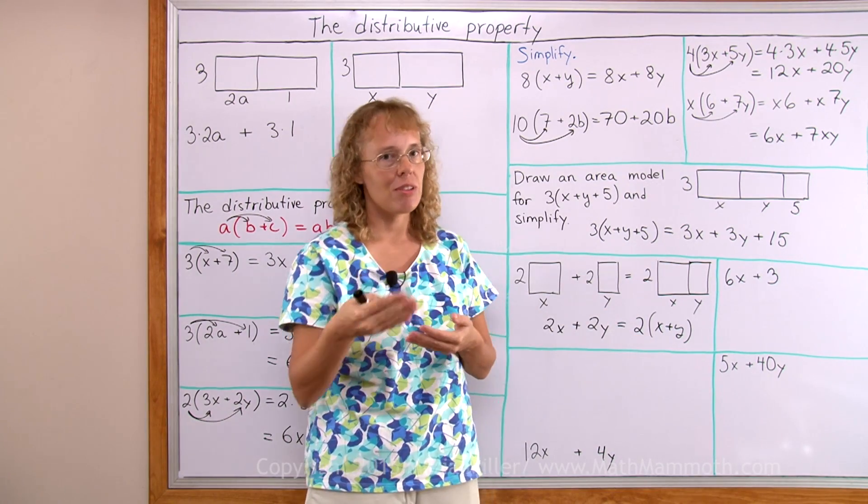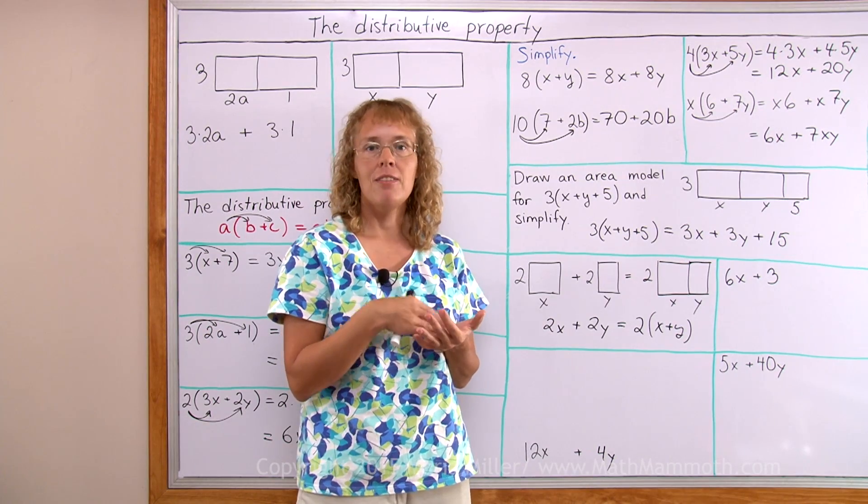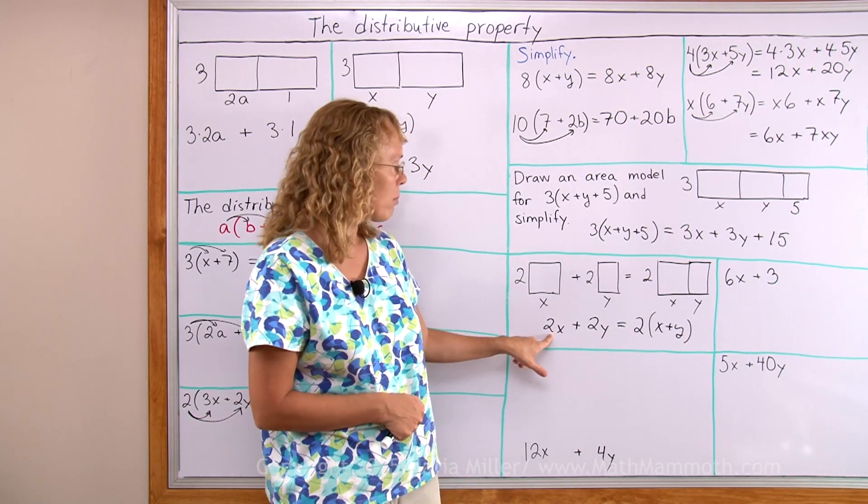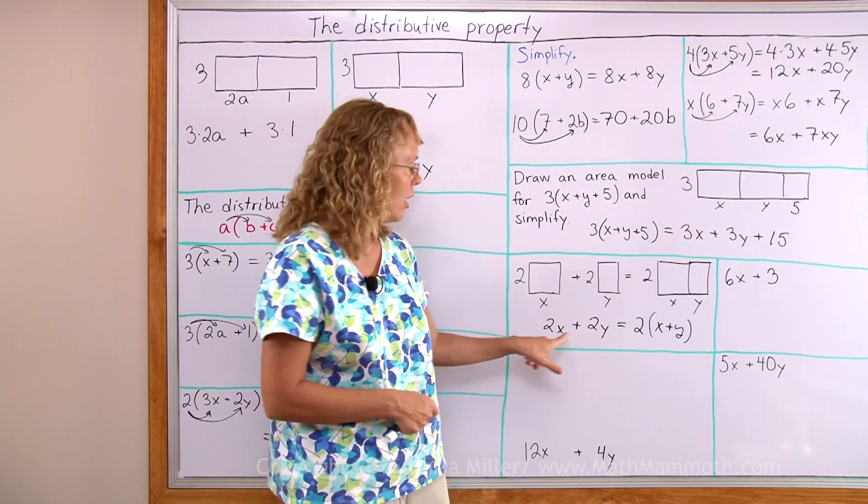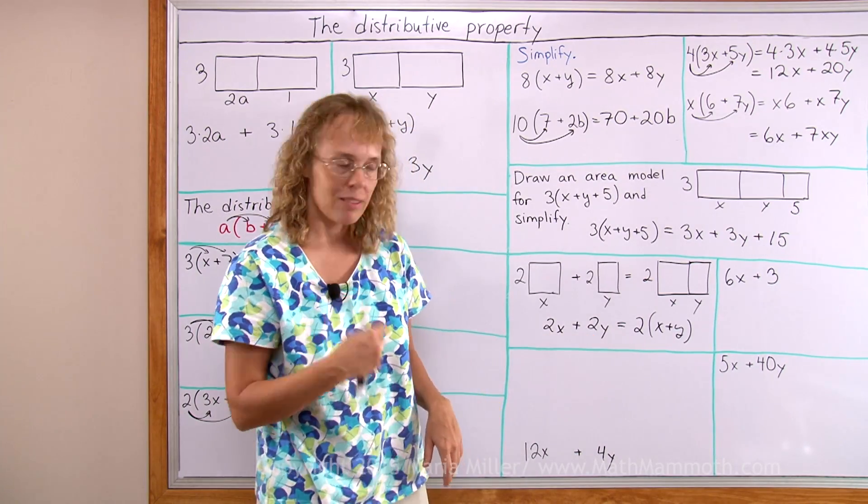In a multiplication like 5 times 3 equals 15, the numbers you multiply are called factors. 5 and 3 are factors. So here's a multiplication. Two times something. This is a multiplication, this is a multiplication. And the 2 is a common number in these two multiplications, so it's a common factor.